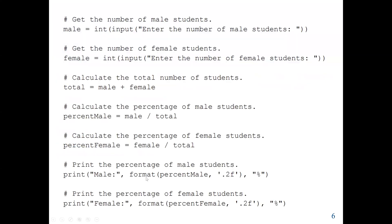The first thing we do is get our input. We ask the user to enter the number of male students using the input function, convert it to int, and store it in the male variable. Next, we get the number of female students the same way, converting to int and storing in the female variable. Then we calculate the total number of students by adding male and female together. Finally, percent_male is male divided by total_students, and percent_female is female divided by total_students.